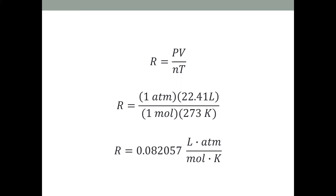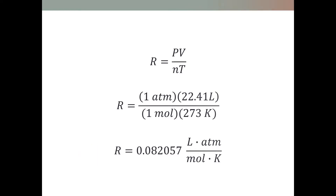That is the ideal gas constant in atmospheres. The ideal gas constant actually changes value depending on what unit of pressure you're using. Standard pressure in kilopascals is 101.3 kPa, and in other units of pressure the value is different as well. If you change the unit of pressure, you change the ideal gas constant.